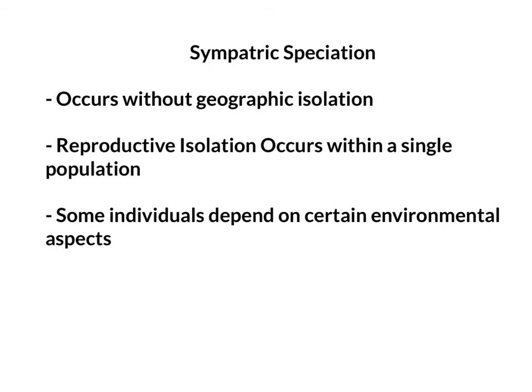Now we'll move on to sympatric speciation. Unlike allopatric speciation, sympatric speciation is speciation in which reproductive isolation occurs within a single population without geographic isolation. There is no physical barrier that prevents any members of these species from mating with one another. All the members are in close proximity, they are in the same habitat, and a new species kind of forms spontaneously. Theories suggest that some individuals in the population become dependent on certain aspects of the environment, such as shelter or food sources, while the others do not.